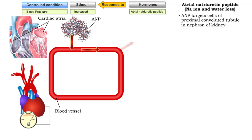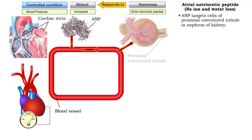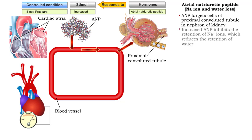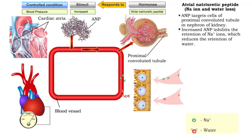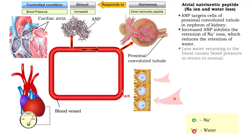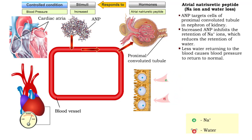Atrial natriuretic peptide also targets cells of the proximal convoluted tubule in the nephron of kidneys. There, it inhibits the retention of sodium ions, which reduces the retention of water. Less water returning to the blood causes blood pressure to return to normal.